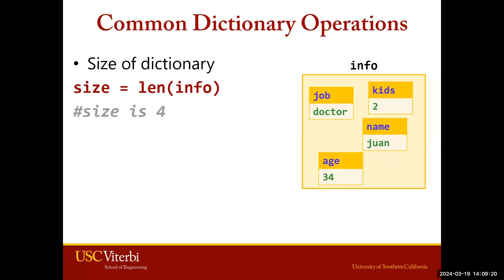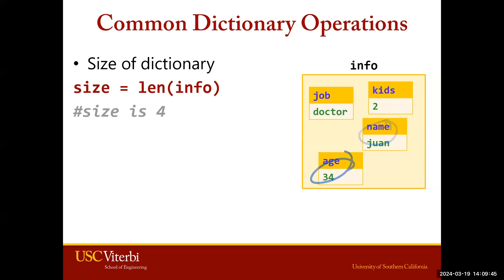Let's take a look at some common dictionary operations. The first is the len function — we've used len before, but when used on a dictionary it counts the number of key-value pairs. Taking the len of our info dictionary, size is 4, because there are 4 key-value pairs within it.